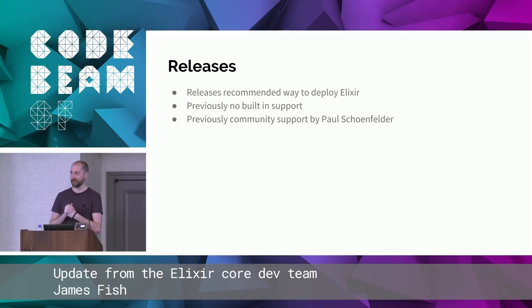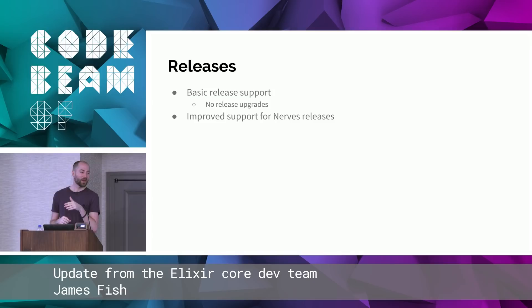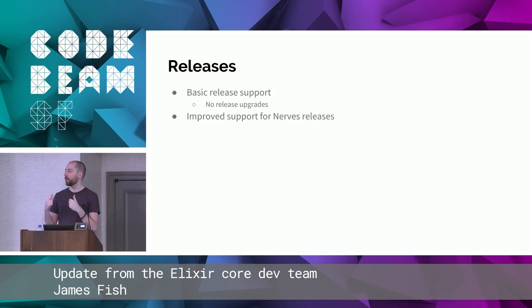Elixir said the best way to deploy is with a release, and yet it didn't have built-in support for releases. Thankfully, Paul provided community support for a long time with great work. He actually made three attempts — ExRM, Distillery 1, and Distillery 2 — and these were all great iterations. The Elixir built-in support is simpler, almost like the minimum you need for release support, and we've also made a few changes to integrate nicer with Nerves — mostly because it's simpler.